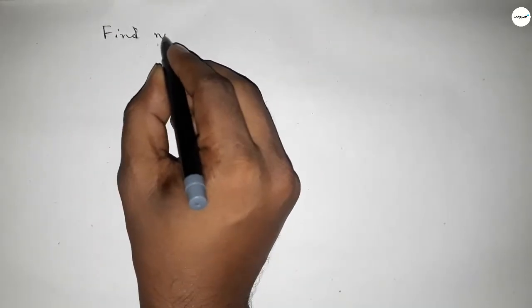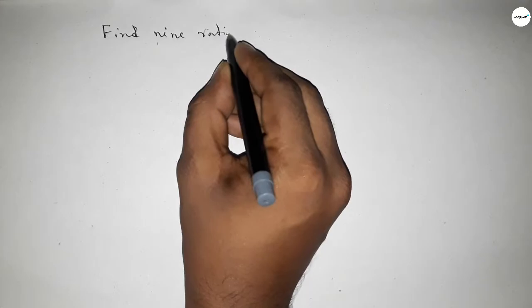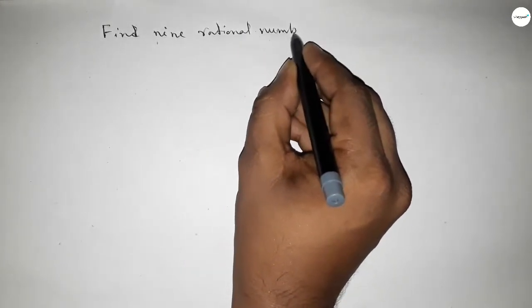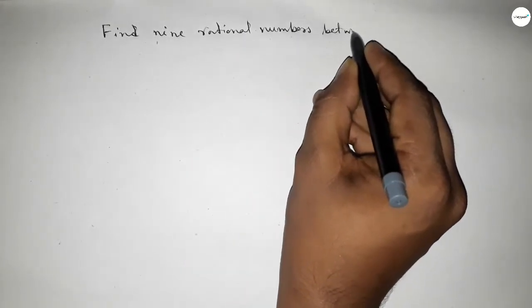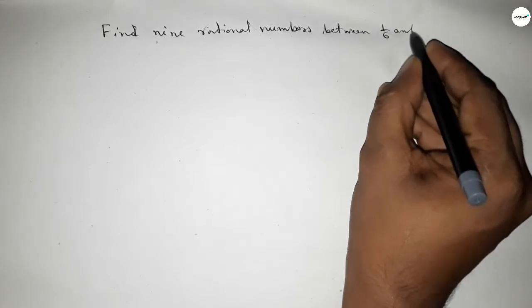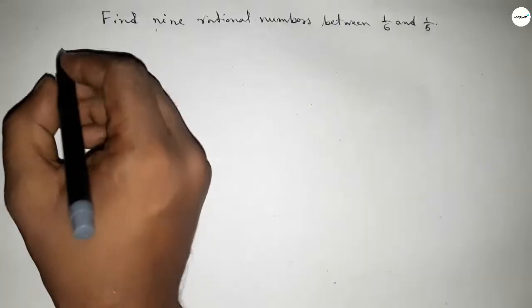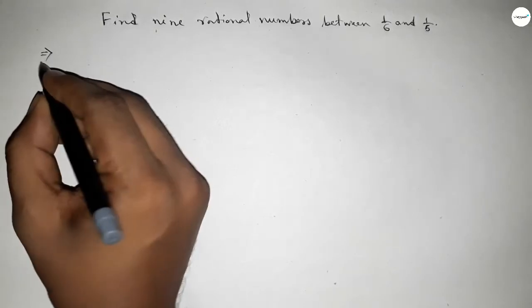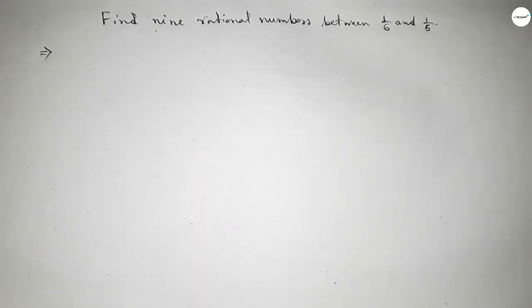Hi everyone, welcome to SSR Classes. Today in this video, we have to find nine rational numbers between 1/6 and 1/5. So let's start. First of all, write down here the given numbers: 1/6 and 1/5.